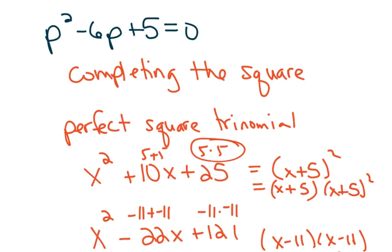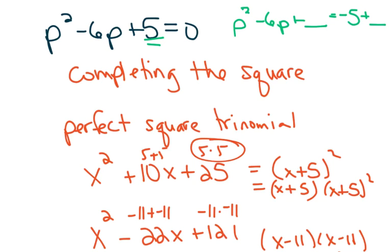The way completing the square works is you take the first two terms of the trinomial and create a blank, because we're going to make our own perfect square trinomial. Then you move the constant to the other side of the equal sign — it's positive 5 on the left, which makes it negative 5 on the right. The way equations work is as long as you add or subtract the same number from both sides, you keep your equation balanced. Whatever number we add to the left, we also add to the right — otherwise the equation is completely different.